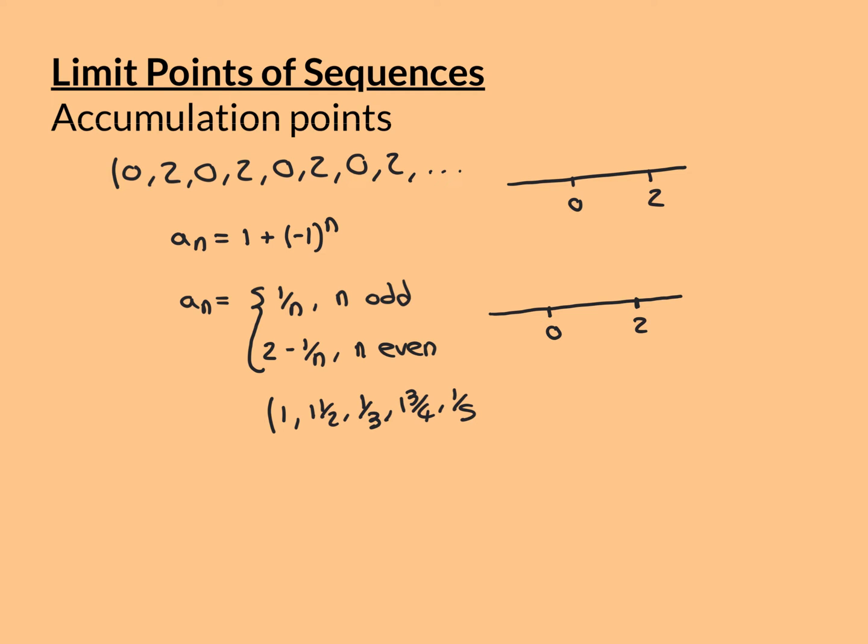From these examples, you can work out what the definition of a limit point is. It's that you have a subsequence of the sequence which converges to that value. Even if the overall sequence isn't convergent, if you can find a subsequence that converges, then the value it converges to is a limit point or accumulation point. The set of all such limit points is the set of limit points for your sequence.